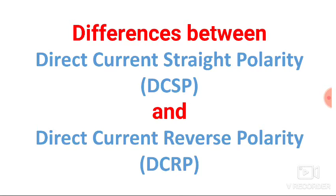As we already know, electrons always flow from the negative terminal to the positive terminal. So it depends on the connection that we have made. Now we will discuss the differences between straight polarity and reverse polarity.